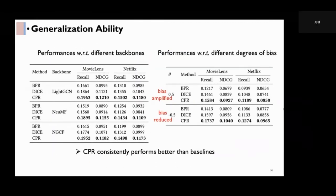We also examine the generalization ability of CPR on different backbones, including lightGCN, neuralMF and NGCF. And we also try to amplify or reduce the data bias of the training sets. And under all these circumstances, CPR consistently performs better than the baselines, showing good generalization ability.